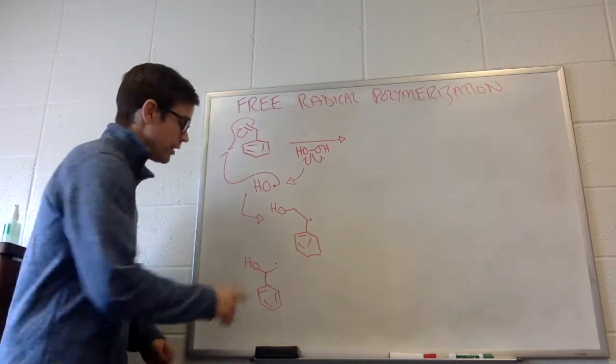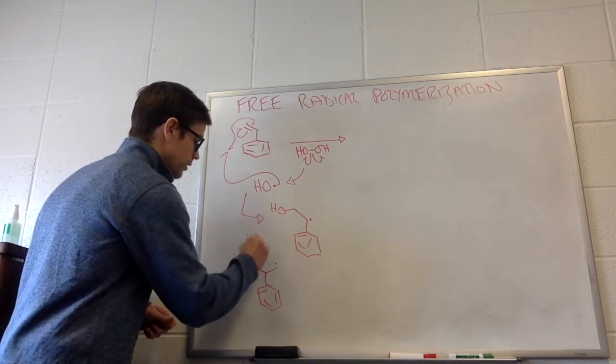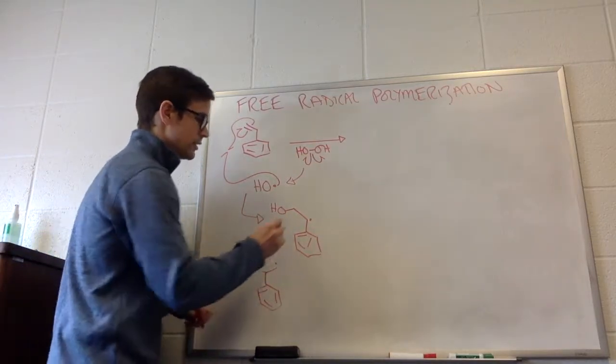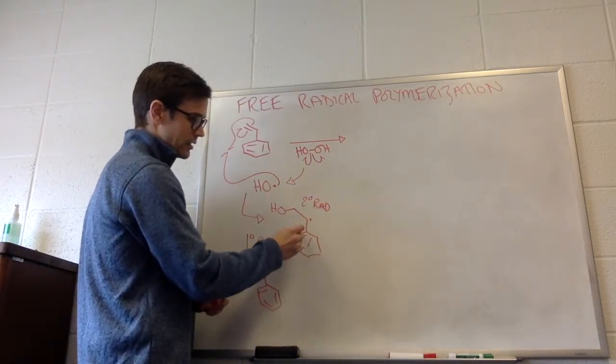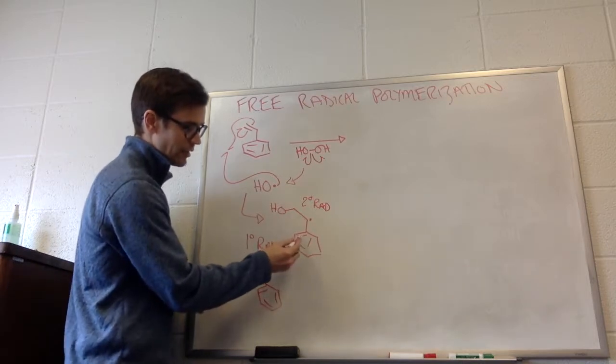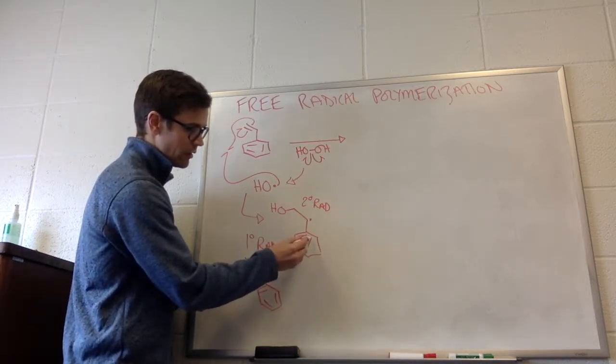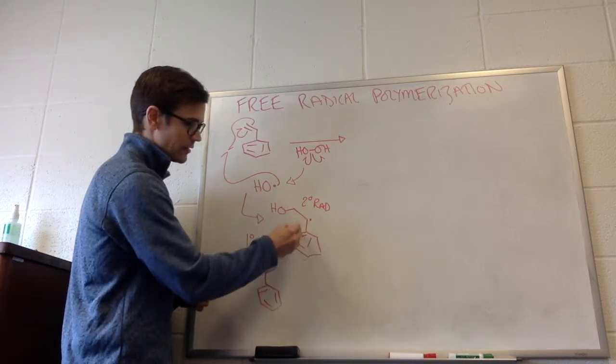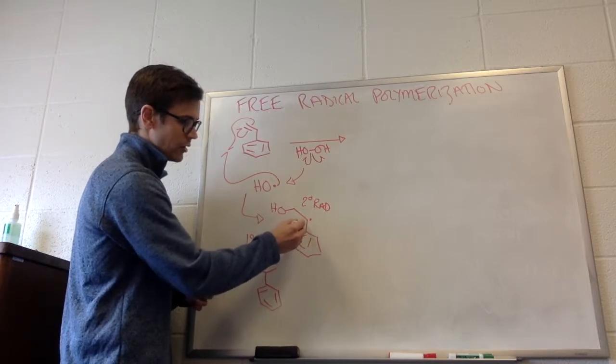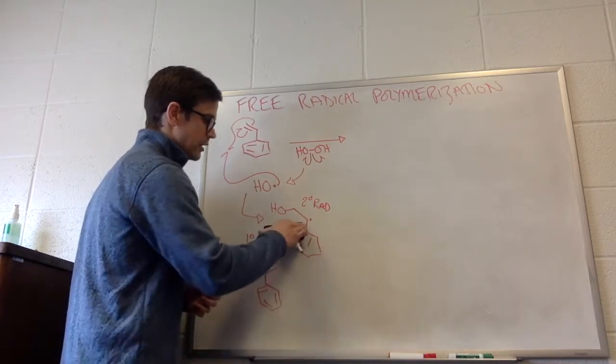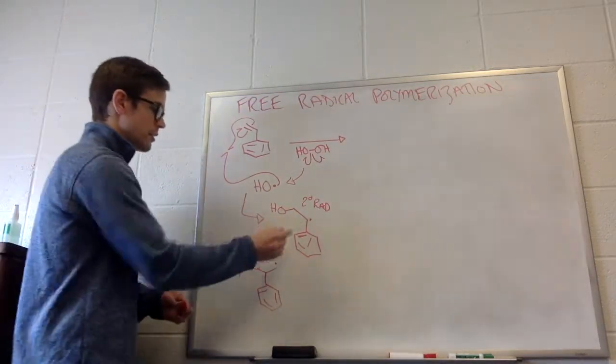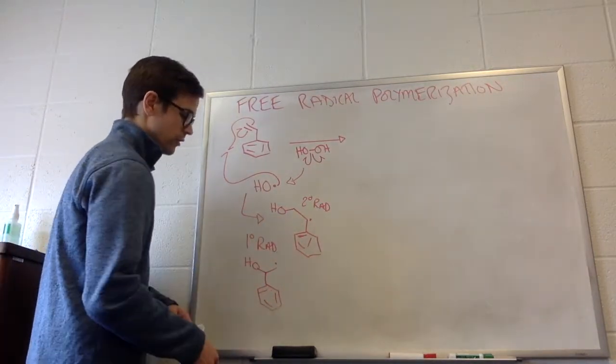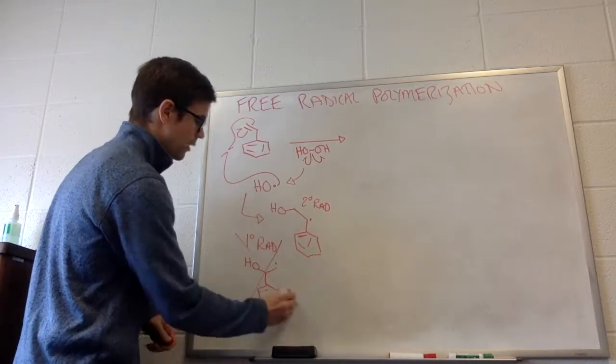Turns out that this is a primary radical, right? This is a secondary radical. And also, it's benzylic. So it's similar to an allylic one. We can think of all of these pi bonds as also being able to donate their electron density to spread out the radical character around this. So this is the more stable radical. So we'll cross that one out.